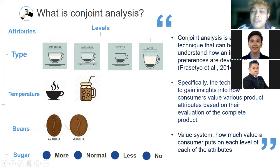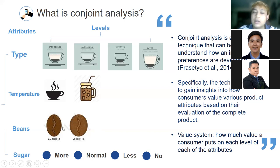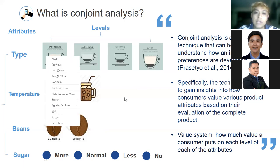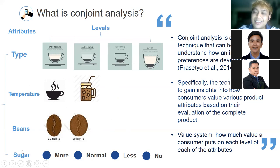Each level should be orthogonal, meaning it is possible to split and combine everything independently. For example, cappuccino can be hot or cold — both are possible. Arabica, Robusta, or Liberica are all possible. You can have a latte with Robusta or latte with Arabica — we can do that. For sugar: without sugar, more sugar, or normal sugar. Later on, you can see which combination is the best.